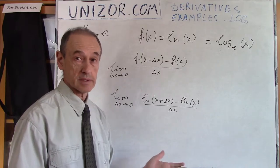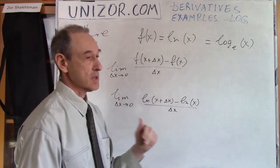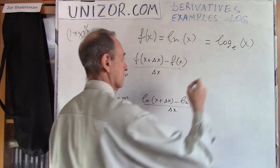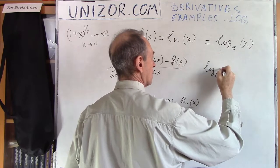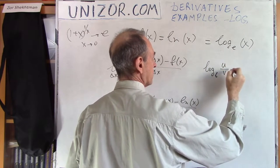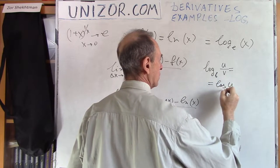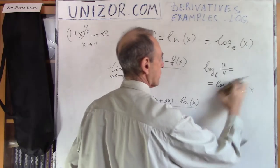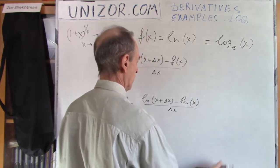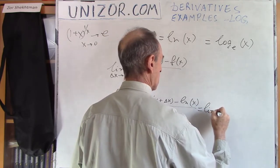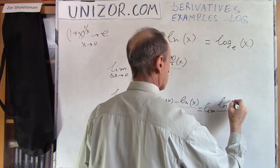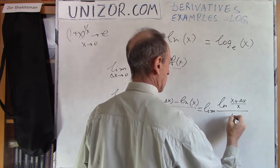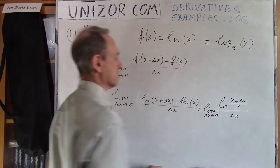To calculate this, we have to make some transformations. You remember that the difference between logarithms of the same base is basically a logarithm of the ratio. Logarithm base b of u divided by v is equal to logarithm u minus logarithm v. This is just an elementary formula of logarithm. So the difference between logarithms we can replace with logarithm of their ratio, divided by delta x, as delta x tends to zero.